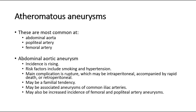Atheromatous aneurysms are most common at the abdominal aorta, popliteal artery, and femoral artery. For abdominal aortic aneurysm, its incidence is rising. Risk factors include smoking and hypertension. The main complication is rupture, which may be intraperitoneal — accompanied by rapid death — or retroperitoneal. There may be a familial tendency, and it may be associated with aneurysms of the common iliac arteries, as well as increased incidence of femoral and popliteal artery aneurysms.